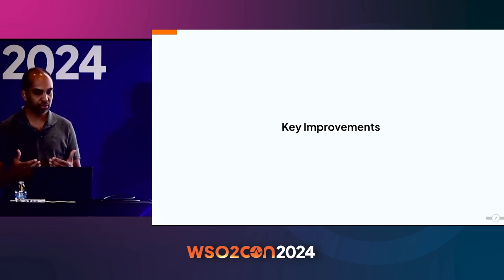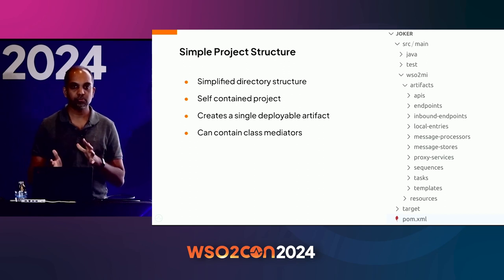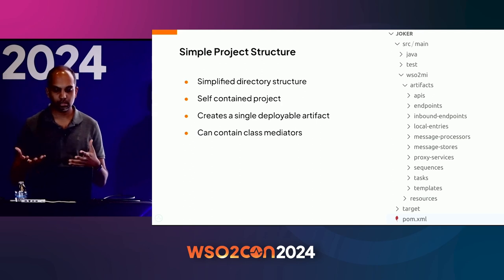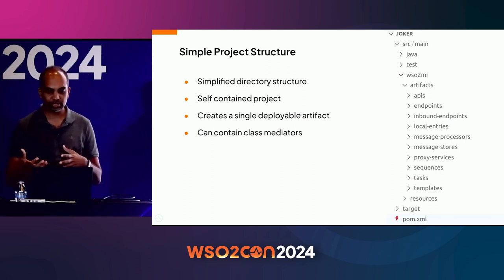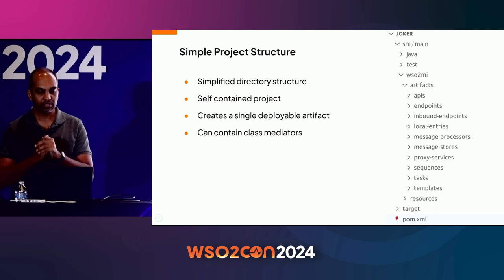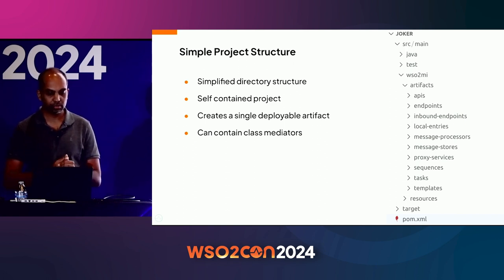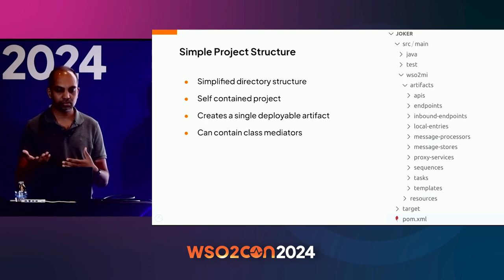Let me go through the key improvements we have made. The first major change is a simpler project structure. If you're already using Micro Integrator, you may have come across different project types depending on your integration scenario. The new project structure can handle all of those scenarios, making it fairly easy to learn if you're a new developer. It can also house class mediators. Once you create the project and want to deploy, you can build it — the project is a single module that creates a self-containing artifact you can deploy to the runtime.